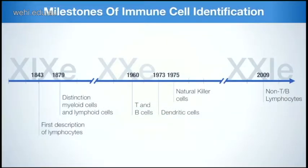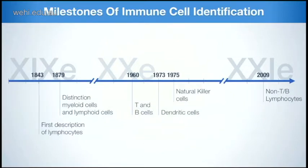Before that, I would like to highlight one important discovery in immunology that occurred a few years ago. For a long time we had this vision of the immune system divided between myeloid cells and lymphoid cells, conferring the adaptive and innate immunity. This started with the identification of lymphocytes by the French Gabriel Andral and the English William Addison in the first half of the 19th century.